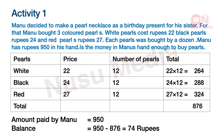The amount paid is 876 rupees. Manu had 950 rupees. That is the balance: 950 minus 876. The balance is 74 rupees. That is the first activity.